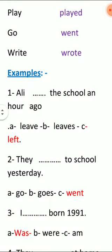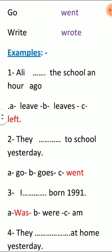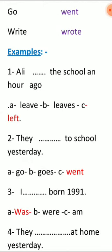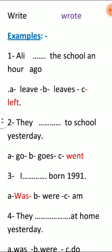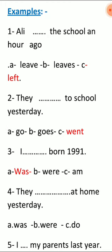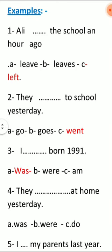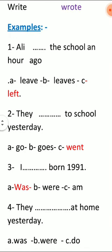ناخد مثلاً: Ali dash school an hour ago. أي جملة ننظر لها مرتين: المرة الأولى ننظر للمفاتيح. المفتاح هنا هو ago، يعني الكلام حصل قبل ساعة. هذا الشاب خرج من المدرسة قبل ساعة. يبقى نحدد الإجابة الصحيحة.